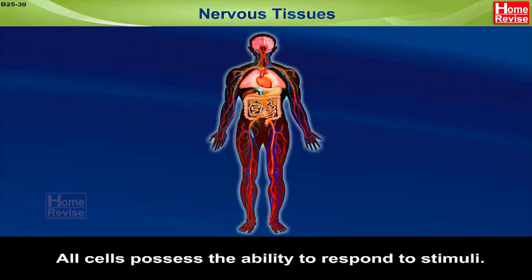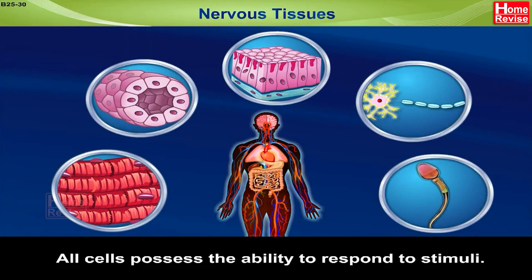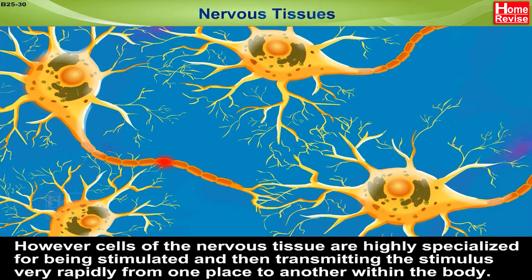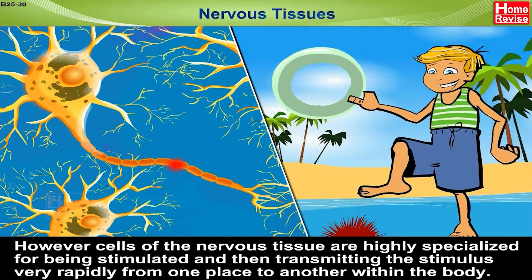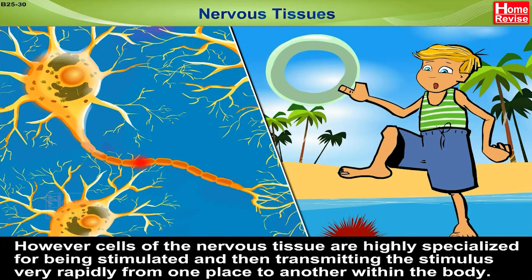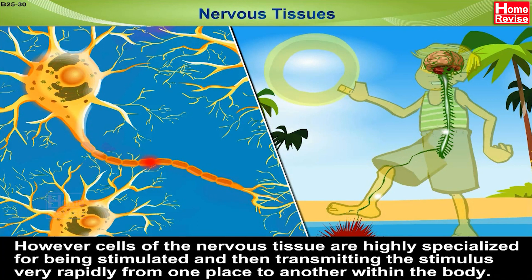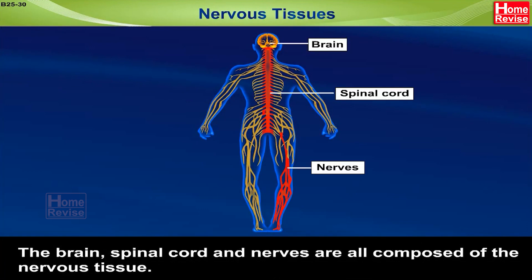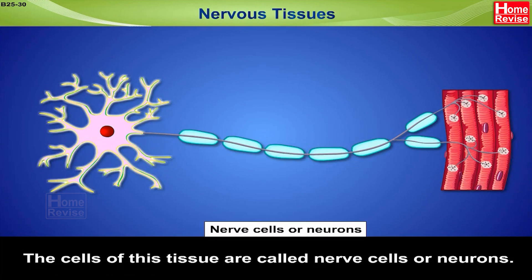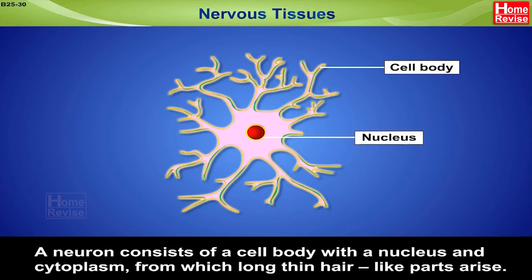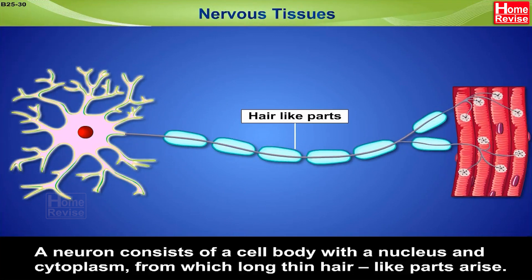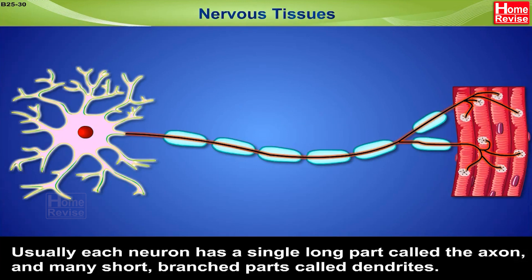Nervous Tissues: All cells possess the ability to respond to stimuli. However, cells of the nervous tissue are highly specialized for being stimulated and then transmitting the stimulus very rapidly from one place to another within the body. The brain, spinal cord and nerves are all composed of nervous tissue. The cells of this tissue are called nerve cells or neurons. A neuron consists of a cell body with a nucleus and cytoplasm from which long, thin, hair-like parts arise. Usually, each neuron has a single long part called the axon and many short branch parts called the dendrites.